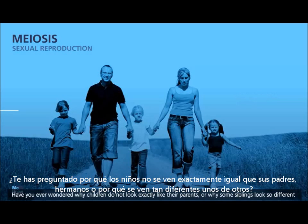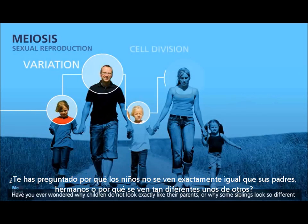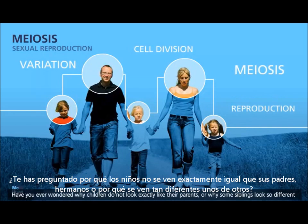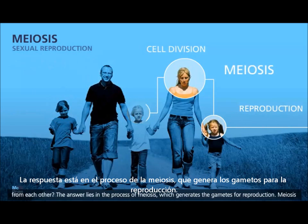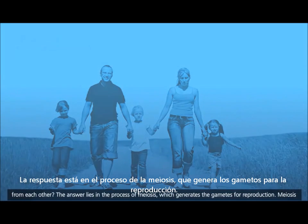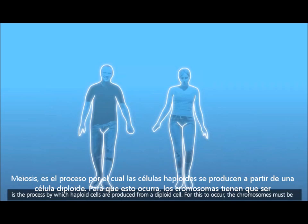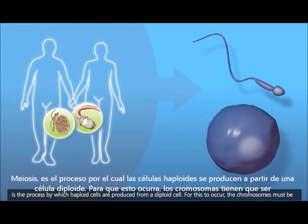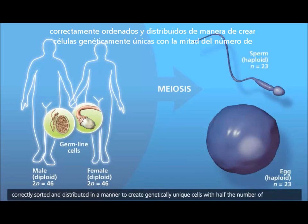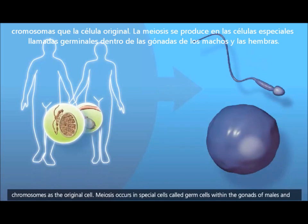Have you ever wondered why children do not look exactly like their parents, or why some siblings look so different from each other? The answer lies in the process of meiosis, which generates the gametes for reproduction. Meiosis is the process by which haploid cells are produced from a diploid cell. For this to occur, the chromosomes must be correctly sorted and distributed to create genetically unique cells with half the number of chromosomes as the original cell.